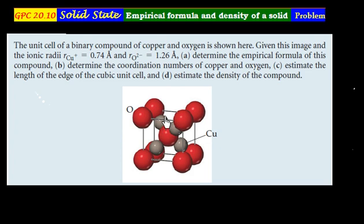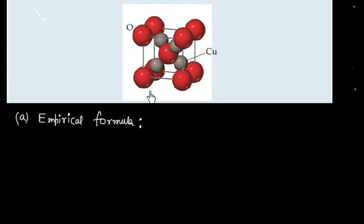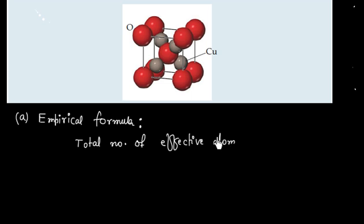This problem is related to calculating the empirical formula and density of a solid. First, we have to calculate the empirical formula of this compound. The empirical formula can be calculated if we know the total number of effective atoms inside a unit cell, so we have to basically calculate the total number of effective atoms for a unit cell.